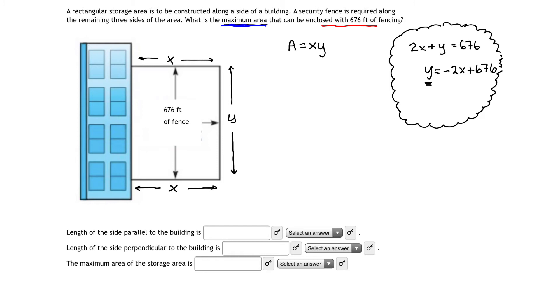I am going to substitute in place of y and rewrite my area in terms of just the letter x. In place of y, we are going to put negative 2x plus 676. That simply means that the area in terms of x is negative 2x squared plus 676x.